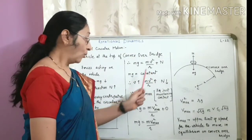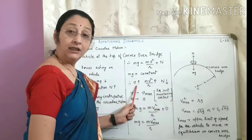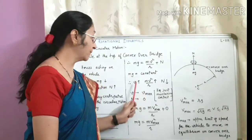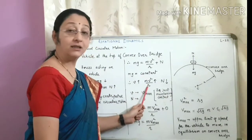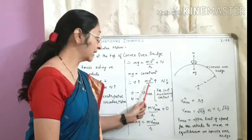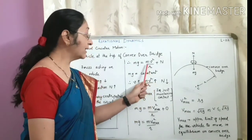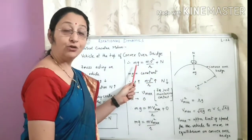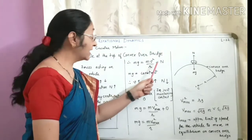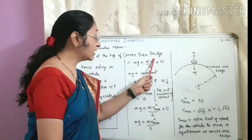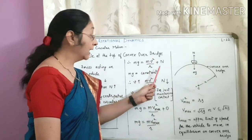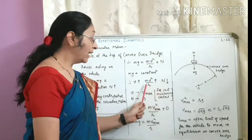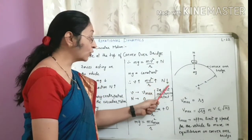Now, when we increase the velocity of the vehicle moving on the convex bridge, the required centripetal force Mv²/R also increases. Since the sum of the centripetal force and the normal reaction is always equal to the constant weight Mg, if the Mv²/R term increases, the normal reaction N will decrease. So as Mv²/R increases, N decreases.